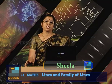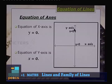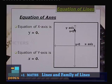The equation of the x-axis is y = 0, because the y-coordinate of each point on the x-axis is 0. Therefore the equation is y = 0. The x-coordinate of each point on the y-axis is 0, therefore the equation is x = 0.